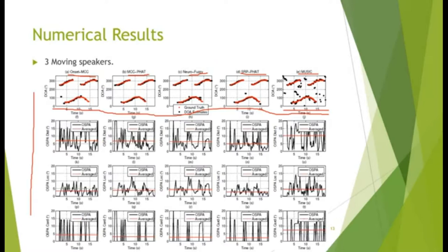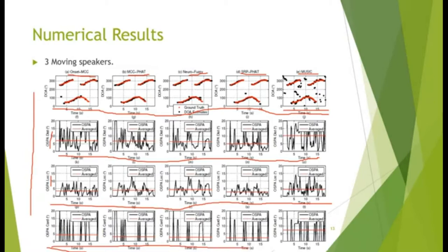We use the OSPAR metric to measure the performance. The OSPAR comprises of two parts: the cardinality error and the location error. The cardinality error covers the misdetection and spurious estimates. The location errors measure how much the estimates deviate from the ground truth. We can see that the overall OSPAR estimation errors of the first four methods are below five degrees.